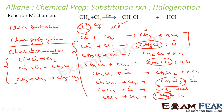To summarize: in the chain initiation step, normal compound gives free radicals — adding free radicals to the system. In the chain propagation step, you give one free radical and get one free radical — maintaining the count. In the chain termination step, two free radicals combine to give a normal compound — decreasing the count of free radicals in the system.